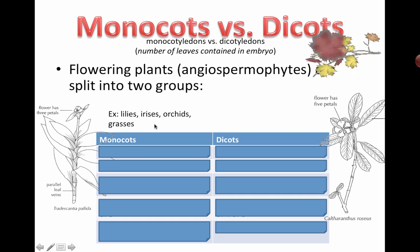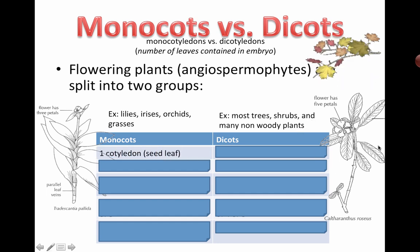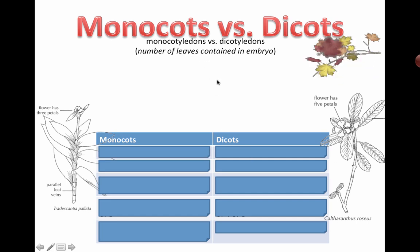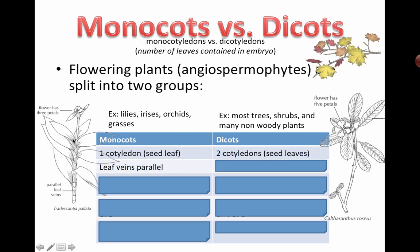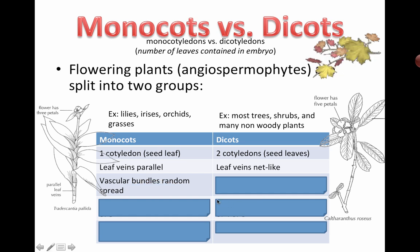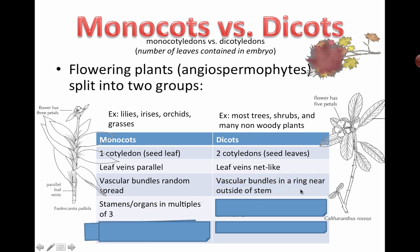Oil, O-I-L, orchids, irises, lilies. Okay, that's to help you remember. And then most trees, shrubs, and many non-woody plants and other flowers are also called dicots, basically. So the main difference is you can use the word to actually help you there. Mono means one and di means two. So it's one seed leaf versus two seed leaves. The leaf veins are parallel in monocots where they're kind of branched out and net-like in dicots. Vascular bundles are randomly spread. If you jump back to somewhere previous in the video, you'll see that the vascular bundles, for example, in the stem are spread out and not as organized as in the dicots. So the vascular bundles are organized in a ring near the outside of the stem.